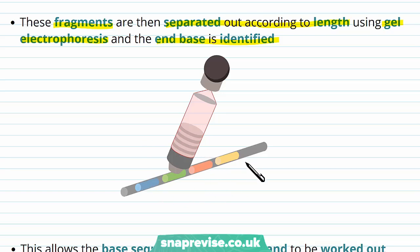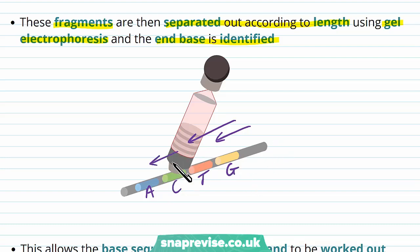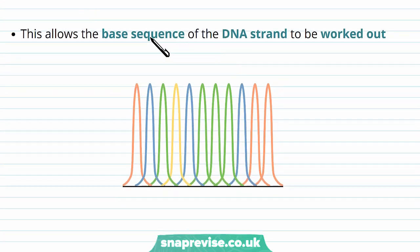Basically, every single fragment that we made had a light or fluorescent nucleotide on the end — for example, A might be blue, C might be green, T might be orange, and G might be yellow. As we pass all the fragments through a detector, all of those lengths will be covered and we can work out the order of base sequences. As all the fragments pass through, we get a graph and we see that the base sequence of the DNA strand is worked out.